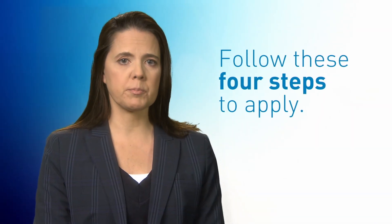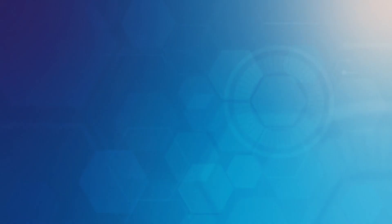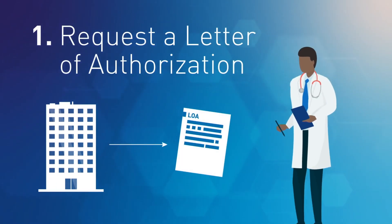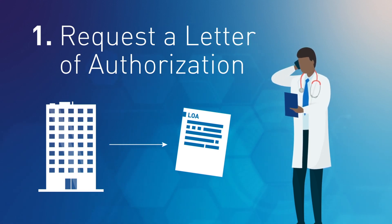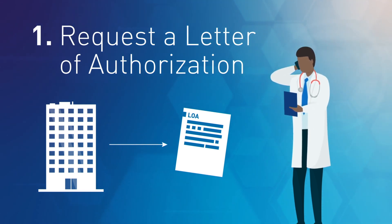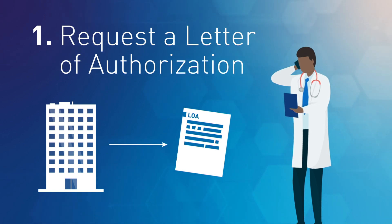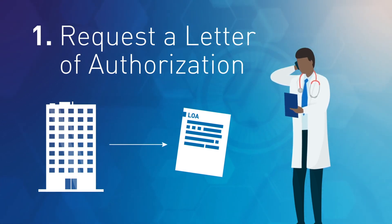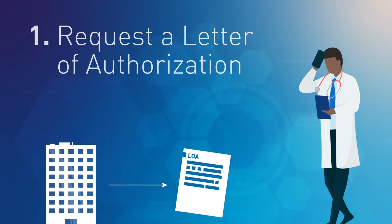Follow these four steps to apply. Step one: request a letter of authorization. The first step in any expanded access request is to ask the pharmaceutical company if they are willing to provide the investigational drug. If the company agrees, ask them to provide you a letter of authorization that grants you the right to reference the information contained in the company's existing IND.